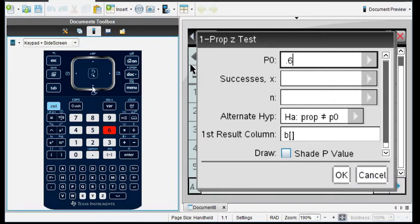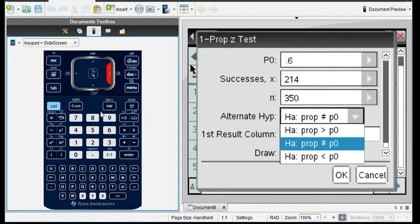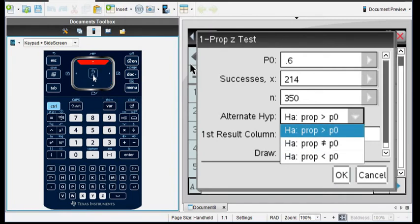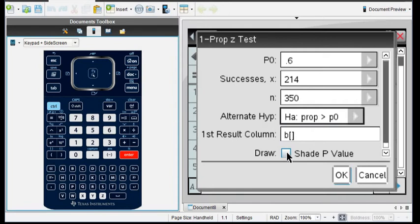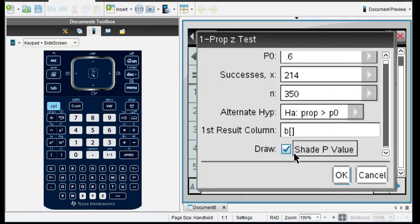Like I said, our p-naught was 0.6. That's the value that's in our null hypothesis and alternative. x, remember, is our number of successes as a whole number. In this case, they gave us the number of successes. If we were given the percentage, I would have to find that beforehand and convert it to the number of successes by doing p-hat times n and round to the nearest whole number. n is the number in our sample. In this case, it's 350. And our alternative hypothesis was greater than, so I want it to be proportion greater than p-naught. I'm going to click this little draw button right here. It's going to draw the z distribution or the normal curve for us and shade the p-value. So I'm going to click OK.